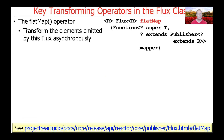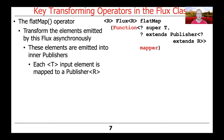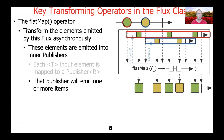The flatMap operator is used to transform the elements emitted by a Flux, ideally in an asynchronous way. The elements are emitted into something called inner publishers. You can see here how we have a function parameterized by generic types, one of which is a publisher. Each element of type T for the input is mapped to a publisher of type R. The publisher will emit one or more items — and the key thing to keep in mind here is one or more, so you can have multiple elements emitted.